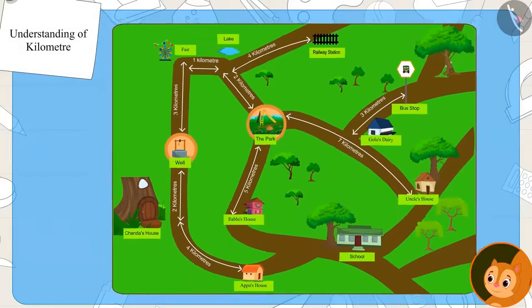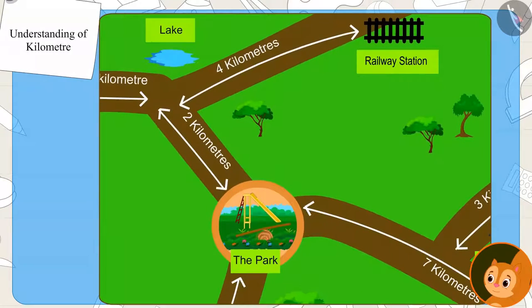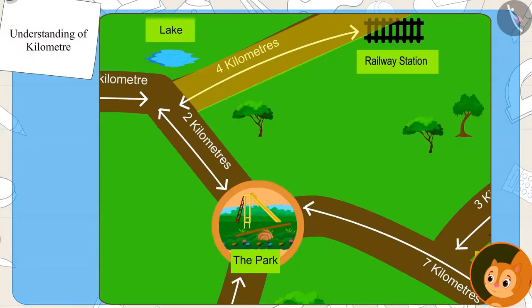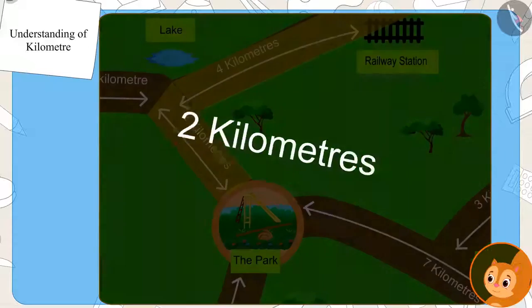Now, Chanda saw on the map that the distance from the lake to the railway station is four kilometers, and that of the park from the lake is two kilometers.